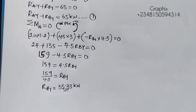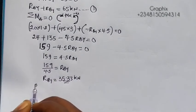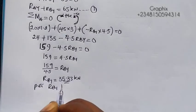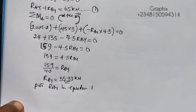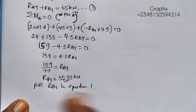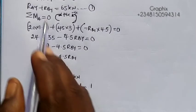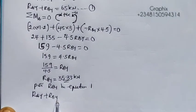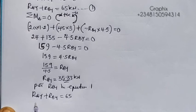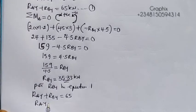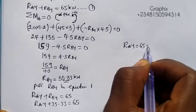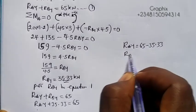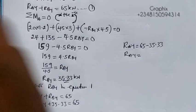Now substitute RBY into Equation 1. RAY + RBY = 65, so RAY + 35.33 = 65. Therefore RAY = 65 − 35.33 = 29.67 kN.